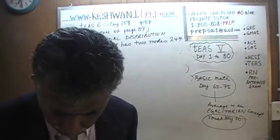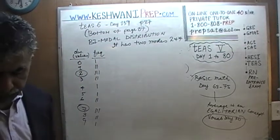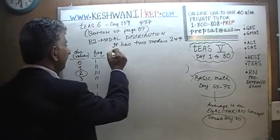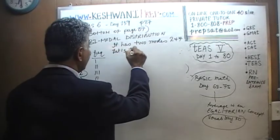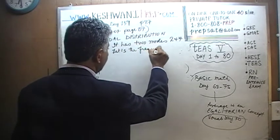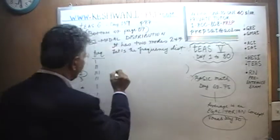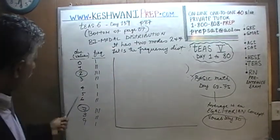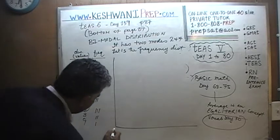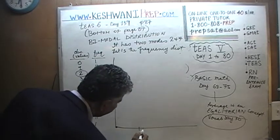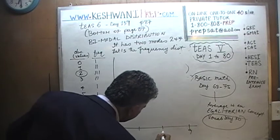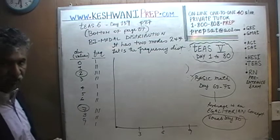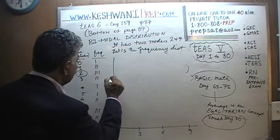What we want to do next is to plot this on a frequency distribution chart. The scores go all the way from 0 to 9. So here's our 0, this is 3, this is 6, and this is 9. The highest frequency we see is 3, so our y-axis goes 1, 2, and 3. Let's begin.